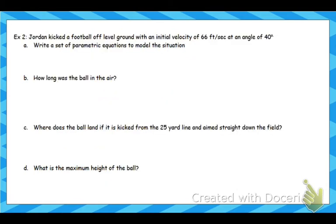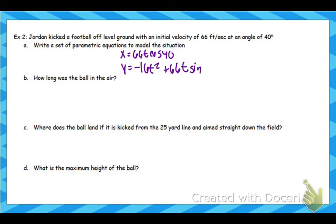Alright, let's look at our next question. So we have Jordan kicking the football. Our equations: x equals 66t cosine 40, and negative 16t squared plus 66t sine 40. So we want to know how long the ball is in the air. So again, we want to know when y equals 0, what is t? So take your y equals equation, plug in 0 for y, and we're going to solve for t here.